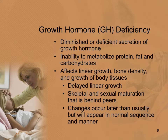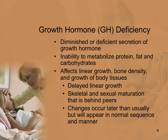With a growth hormone deficiency, we see a diminished or deficient secretion of growth hormone, along with an inability to metabolize protein, fat, and carbohydrates. It affects linear growth, bone density, and growth of body tissues. It's not just about height — it affects how quickly they fill out as well. We see delayed linear growth and skeletal and sexual maturation that is behind peers, though these changes will appear in normal sequence eventually.